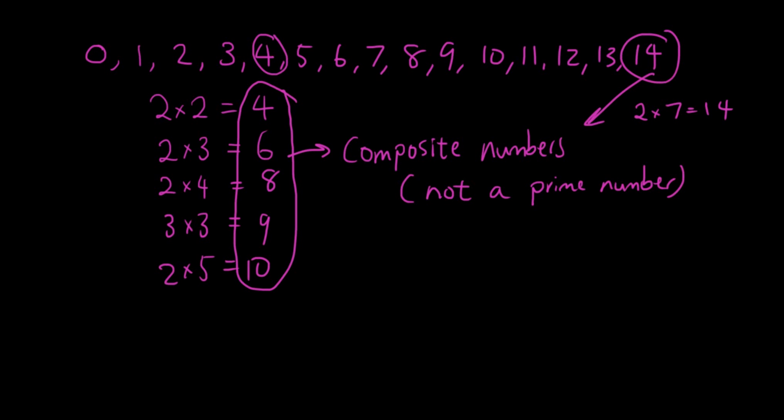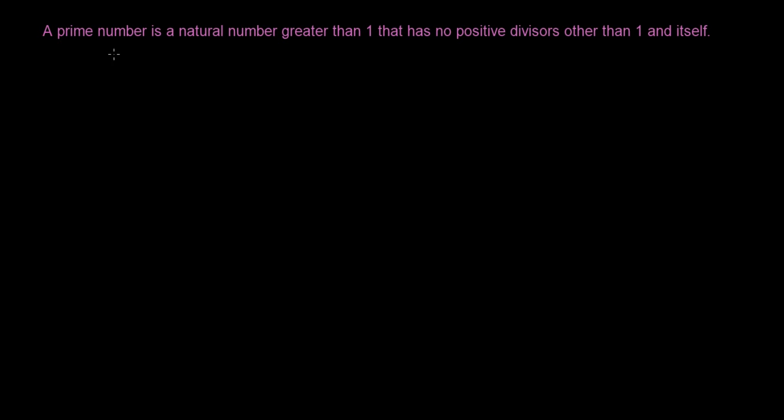So using this principle, let's try and understand the definition of prime numbers. So this is the definition for prime numbers on the Wikipedia website. And basically it says, a prime number is a natural number greater than 1 that has no positive divisors other than 1 and itself.